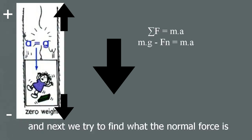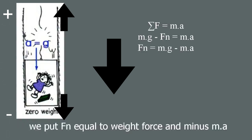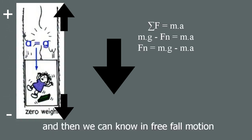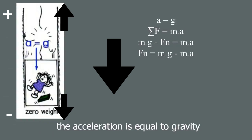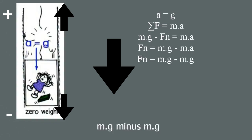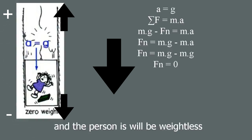We solve for normal force: normal force equals weight force minus ma. In free fall, the acceleration equals gravity g, so normal force equals mg minus mg, which equals zero. The person will be weightless.